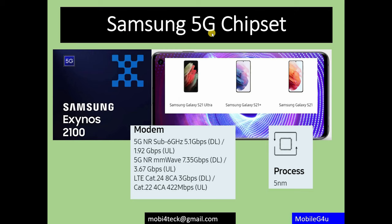Samsung has a series of 5G chipsets called Exynos. In India they launch phones with Exynos; in the US with Qualcomm. The Exynos 2100 is a 5G chip at 5nm, supporting 5G NR millimeter wave and LTE Cat 24. Samsung Galaxy S21, S21 Plus, and S21 Ultra all support 5G chipsets. You have to follow these four to five companies for whatever new updates and releases they bring.